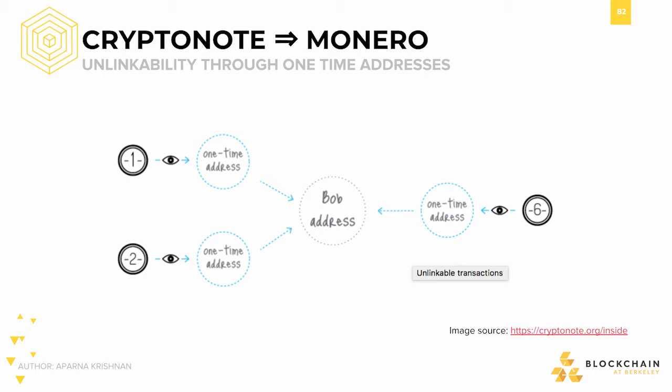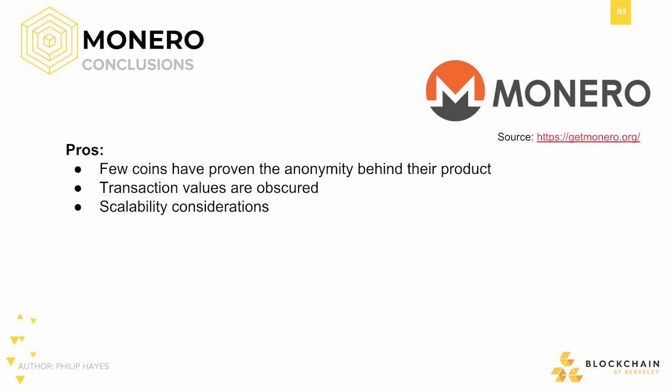For the conclusion, let's look at some pros and cons. Few coins have formally proven the anonymity behind their product — Monero is one of the few, as is Zcash, which we'll be talking about in the coming slides. Transaction values are obscured with cryptography as well, though it has been a bumpy road in the past due to bugs in implementation of ring signatures and other security vulnerabilities, but it seems like all is well at the moment. Also, Monero has some good scalability choices: it has a fast block time and allows for variable block sizes, making it flexible during high and low traffic times of network operation.